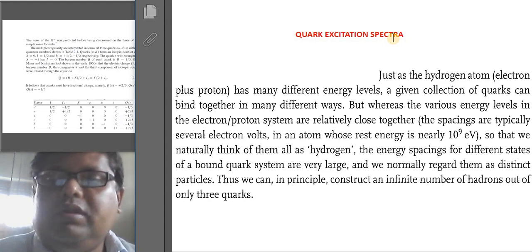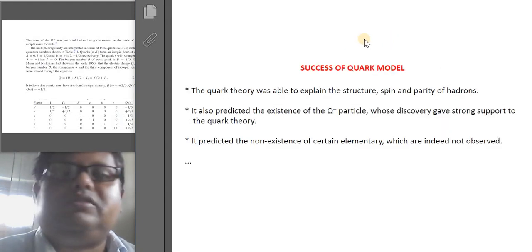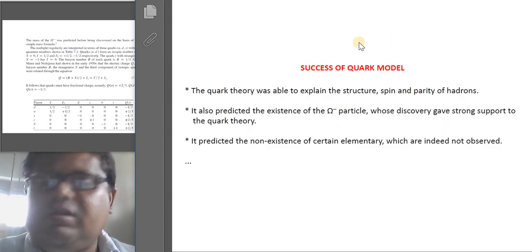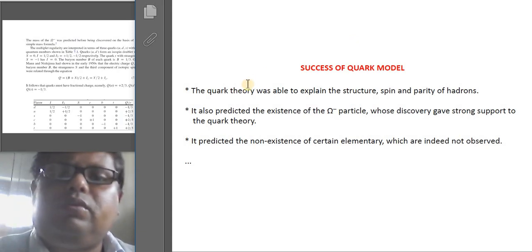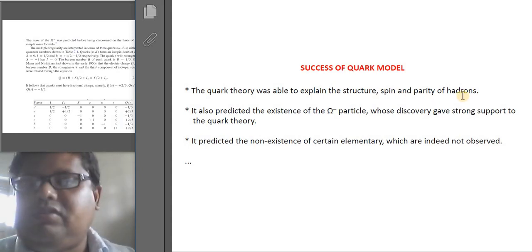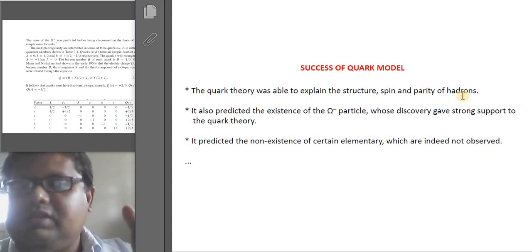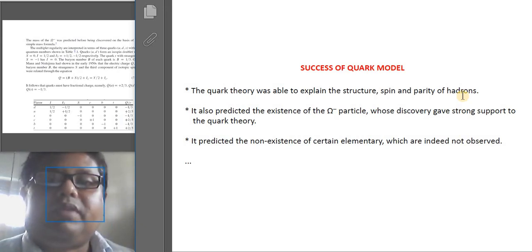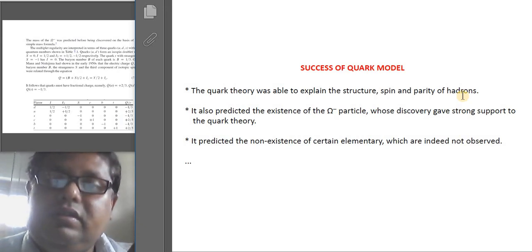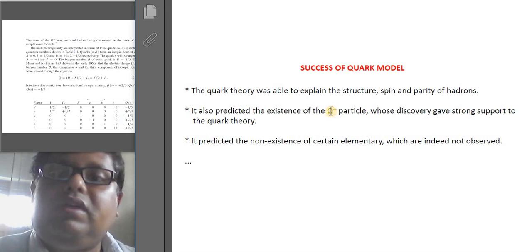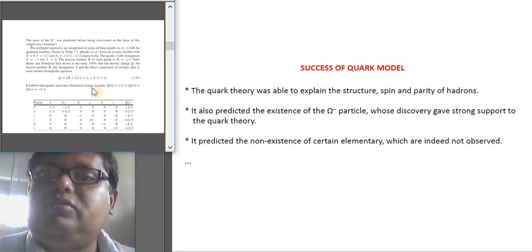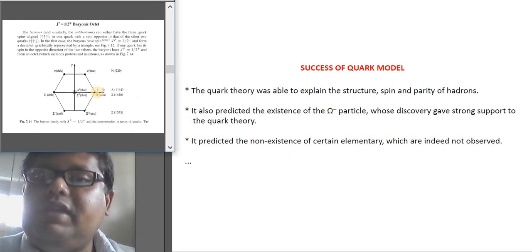Now let me quickly talk about the success of the quark model. The list is very long; I have just written the most simplest ones here. The quark model was able to explain the structure, spin, and parity of the hadrons. I have just shown you one list for the case of decuplet baryons. And it also predicted the existence of the omega minus particle.